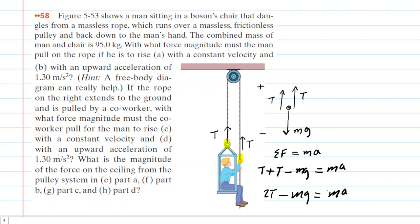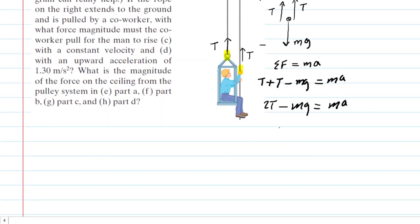And in part A, we're looking for that tension. We're looking for how hard or with what magnitude of force the man must pull. But remember, he's pulling with a force of tension. So we have to find that tension in this question. We can do so by adding mg to both sides of the equation, canceling it on the left-hand side. So now we have 2T is equal to ma plus mg. And then we will divide both sides of the equation by 2.